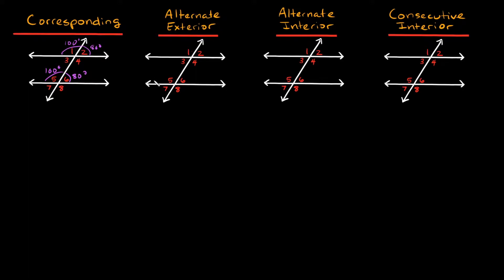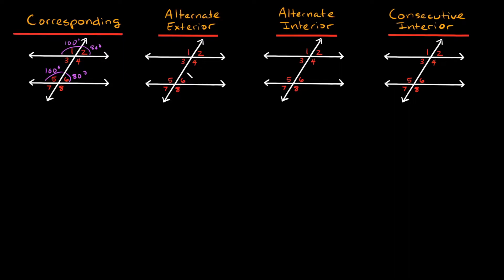Now what are alternate exterior angles? One way I like to think about this is you can think about your parallel lines as a sandwich. These are kind of like the bread of your sandwich, and everything between your parallel lines is the inside of the sandwich — this is where all the goodies are. So that means all the angles in here — three, four, five, and six — are your interior angles. Whatever is outside of your sandwich are your exterior angles: one, two, seven, and eight. Now if we're talking about alternate exterior angles, we're talking about on alternate sides of this transversal. So one and eight would be alternate exterior angles, and two and seven would also be alternate exterior angles. And if your two lines are parallel, then these are congruent — so one and eight are congruent, and two and seven are congruent.